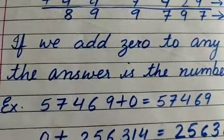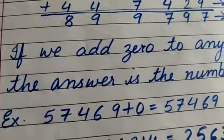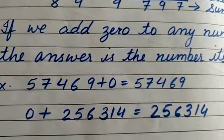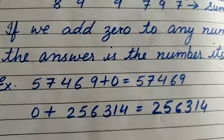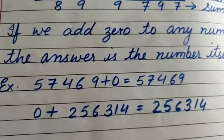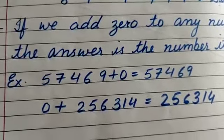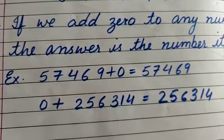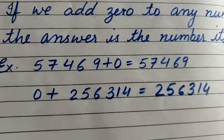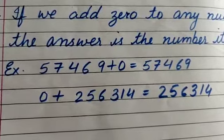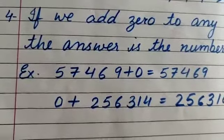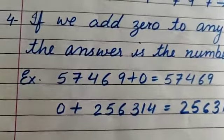Fourth point: if we add zero to any number, the number remains the number itself. When we add zero in any number, the answer will be the number itself. Hum kisi bhi number meh zero add kareenge, toh number meh koi bhi changes nahi honge — answer wahi number ayega. For example, if we add zero in four, the answer will be four. If we add zero in six, the answer will be six.